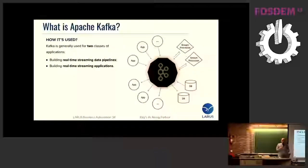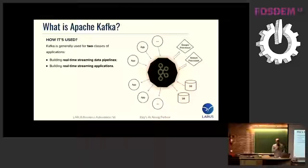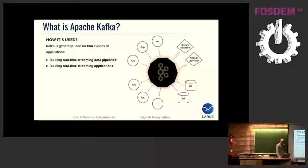So how is Kafka used? It's used for two general classes of application. First, for building real-time streaming data pipelines — think about real-time ETL pipelines where you can use Apache Kafka in combination with Apache Spark. Second, for building real-time streaming applications — think about a microservices environment where you need to exchange messages between microservices. Apache Kafka is a well-suited application for that use case.